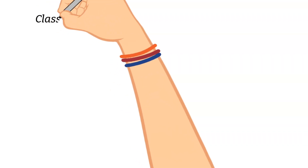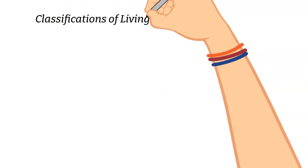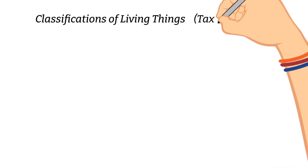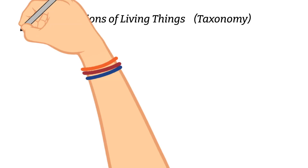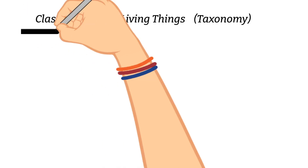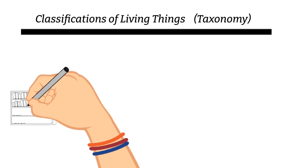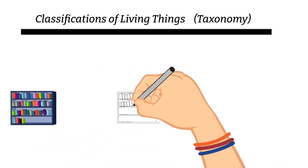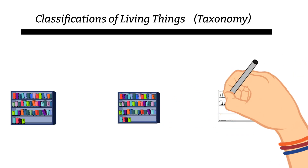Let's start doodling. We're going to be talking about the classifications of living things. The term we use for this is taxonomy — the study of the classification of living things.